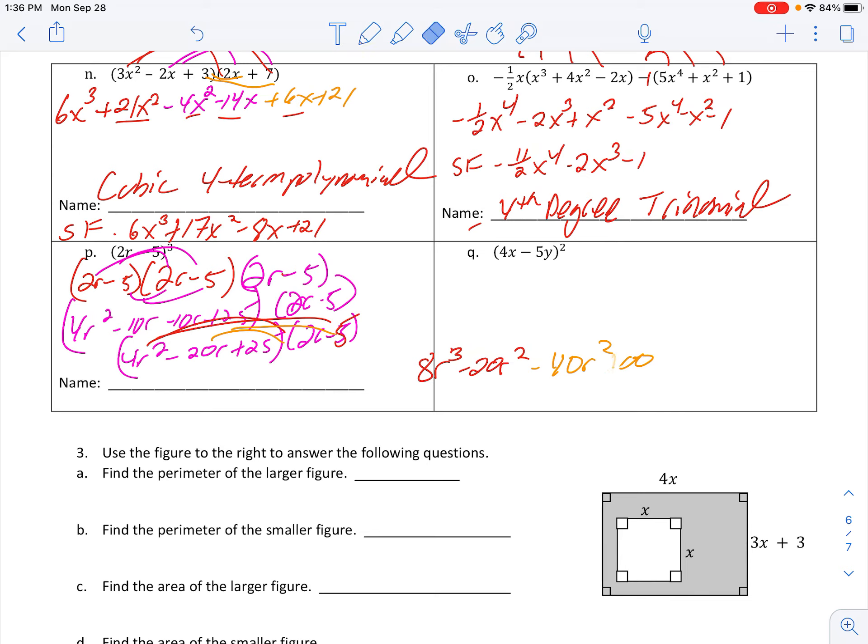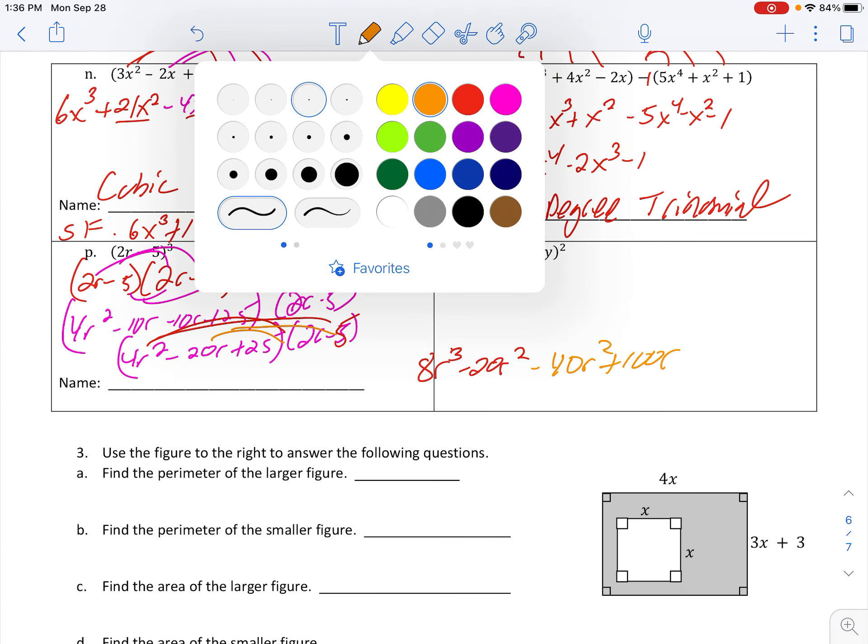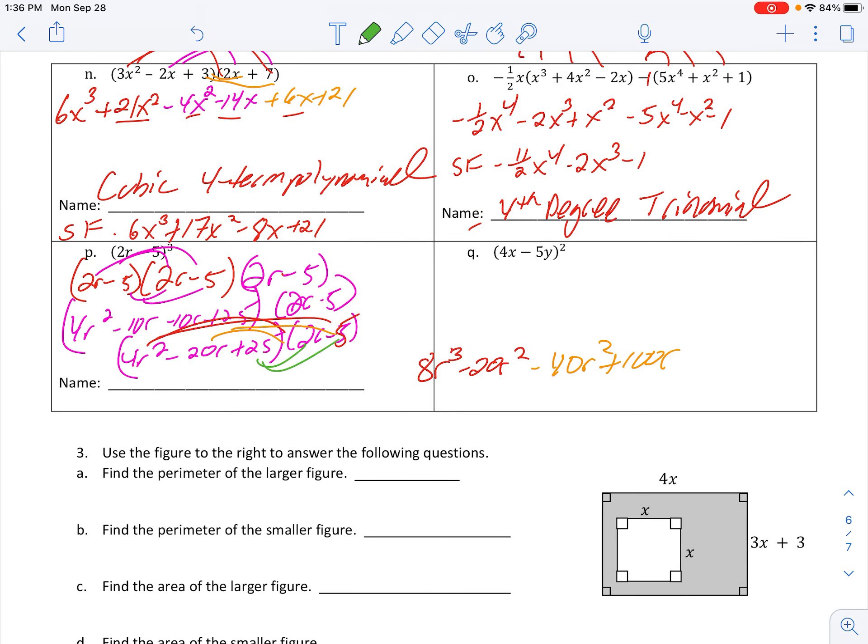Give me negative 40r to the second and plus 100r. And then lastly, let's try this green. Distribute the 25. 50r. 25 times negative 5 is negative 125. Put it in standard form. 8 minus 40 is like terms. 8 cubed is by itself. I can't read my handwriting. Negative 20r squared minus 40r squared is negative 60r squared. 100r plus 50r.